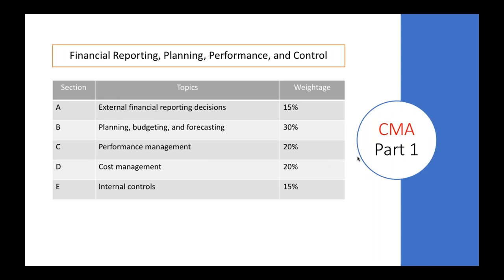The current syllabus for this year 2019 has five sections, A to E: External Financial Reporting, Financial Budgeting and Forecasting, Performance Management, Cost Management, and Internal Controls, with the respective weightages as per the IMA.